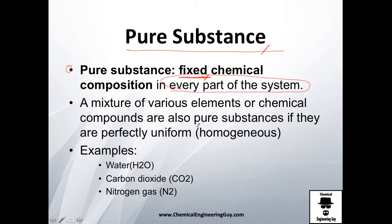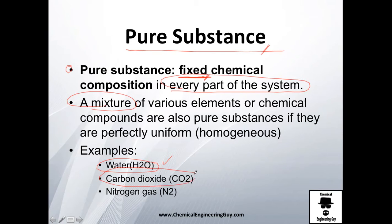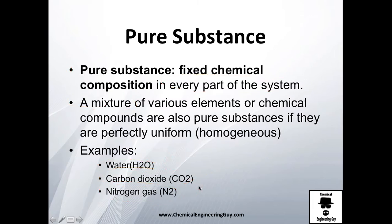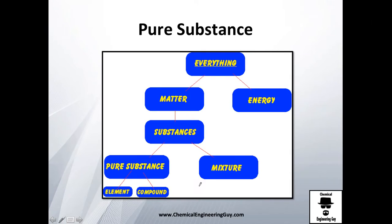A pure substance is homogeneous throughout the whole system. Mixtures of various elements or chemical compounds can also be known as pure substances — or rather, mixtures of pure substances. For example, water (H2O) is a pure substance, CO2 is a pure substance, and nitrogen gas is a pure substance.